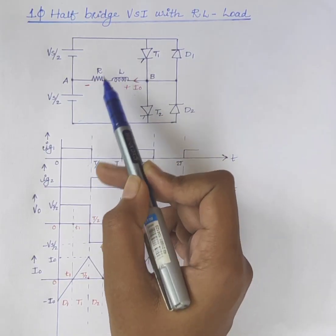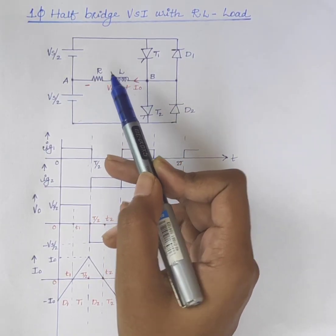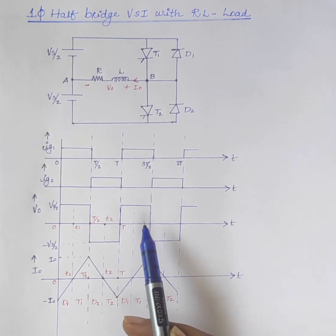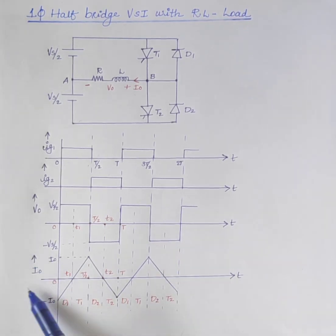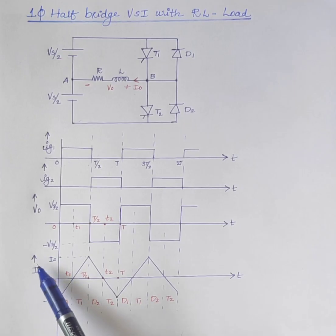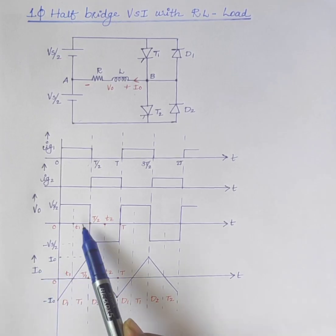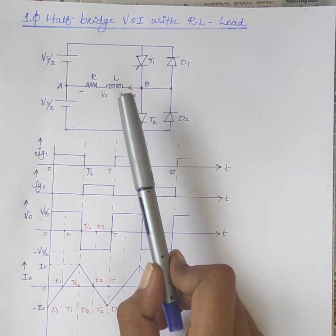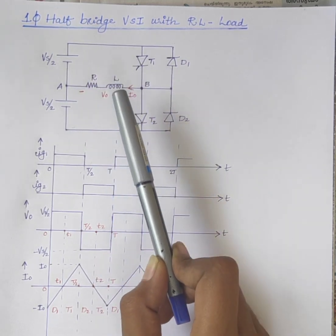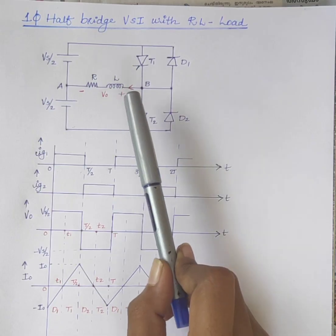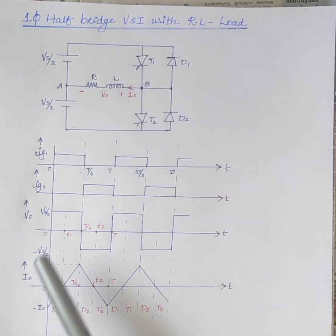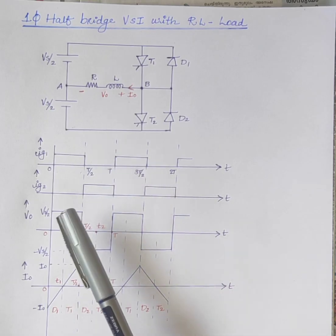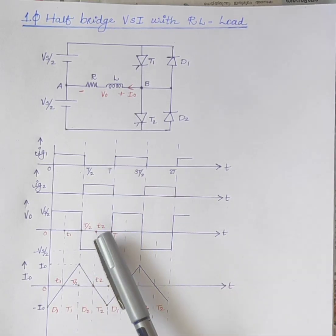With an inductive load, the output voltage waveform is similar to that with a resistive load. However, the load current cannot change immediately with the output voltage. In the case of RL load, the output current will be an exponential function of time and lags the output voltage by an angle phi.